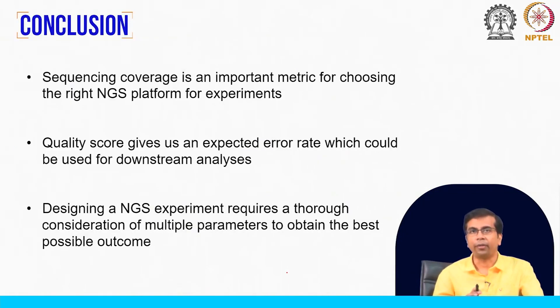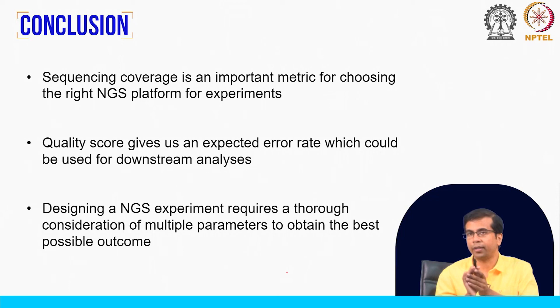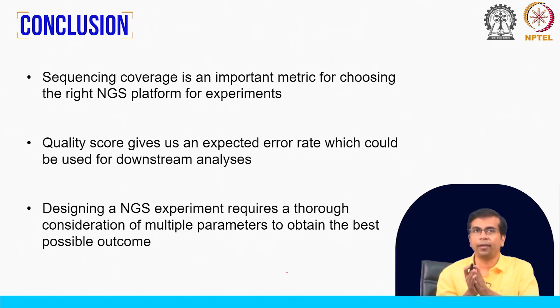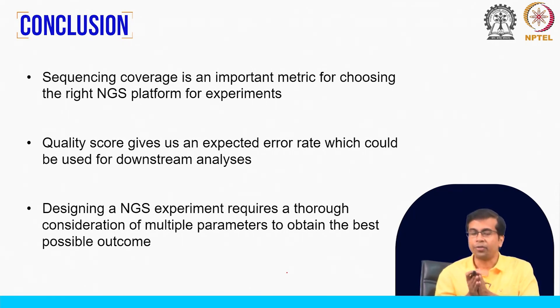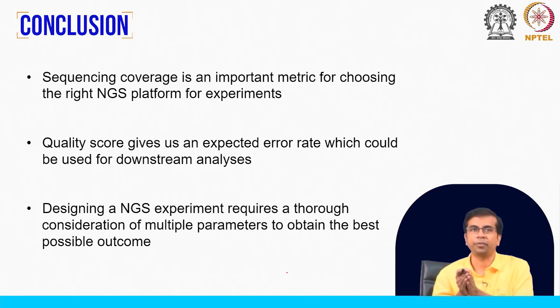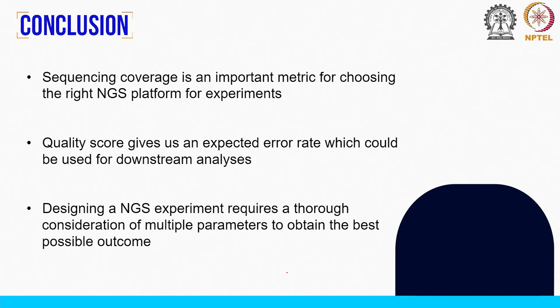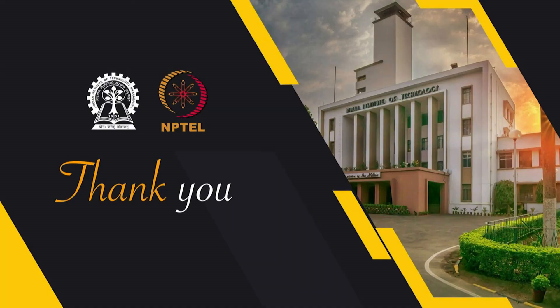That concludes our discussion. To summarize: sequencing coverage is an important metric for choosing the right NGS platform — you can calculate required reads from genome size, coverage, and read length. Quality score gives an expected error rate useful for downstream analysis, and we will incorporate quality scores in subsequent classes. Designing an NGS experiment requires careful consideration of many features, and depending on your need and available resources, you would find the optimal solution. Thank you.